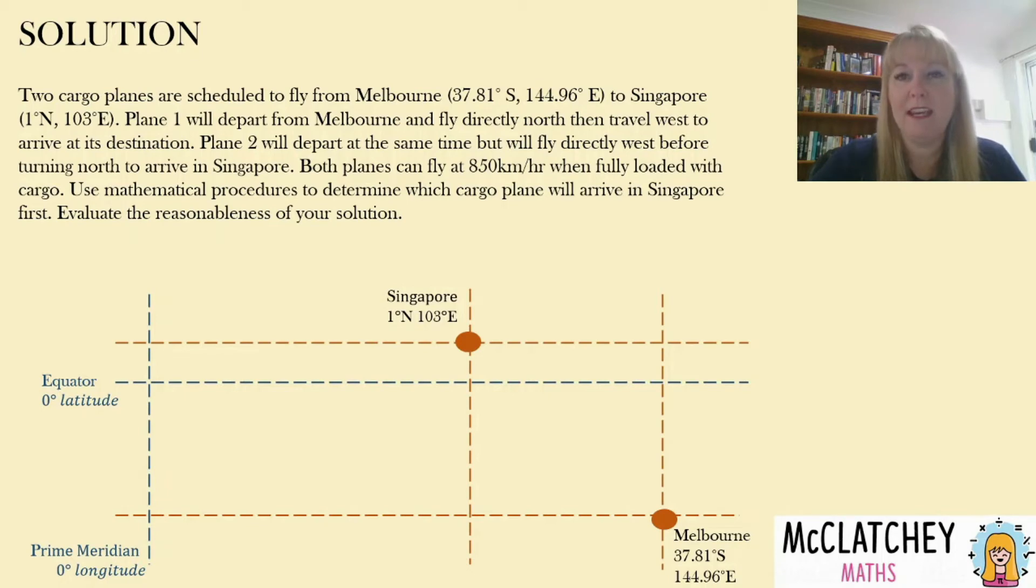Now that we've got this in here we can look at where plane one's going to fly directly north and then turn and fly in a westerly direction. Plane two is going to start by flying in that westerly direction and fly north. At first glance you might be thinking well if they're flying at the same speed surely they're going to arrive at the same time and that's the first thought that I had.